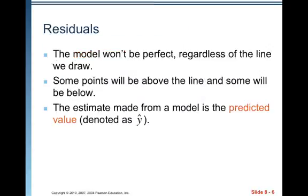The model won't be perfect regardless of the line we draw. Some points will be above the line, and some will be below. The estimate made from a model is the predicted value, and it's denoted as y-hat. That's to differentiate from y-values that are actual observations of that response variable. So y-hat is a predicted value. Y is an observed value.